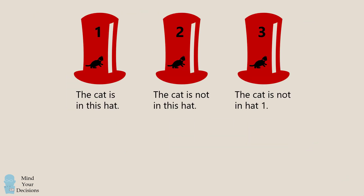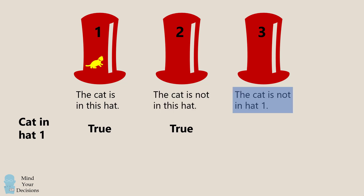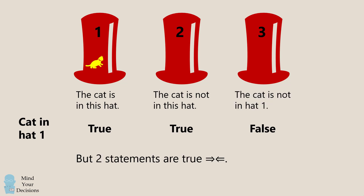We will solve the problem by logically considering each case. Suppose the cat is in hat 1. We will then evaluate each statement. Since the cat is in hat 1, the first statement will be true. Similarly, since the cat is in hat 1, it will not be in hat 2, which means the statement for hat 2 will also be true. The statement on the third hat will not be true — it will be false. But now we have two statements that are true, and that contradicts the given information that exactly one of the statements is true. Therefore, we cannot have the cat in hat 1. This cannot be the correct answer.